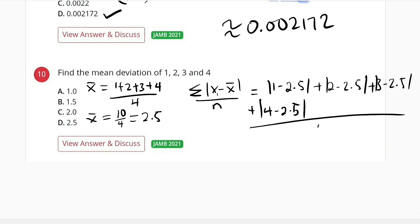1 minus 2.5 will give us negative 1.5, but in an absolute form we have positive value 1.5. Then we add 2 minus 2.5, which will give us 0.5, but in absolute form is 0.5. Then 3 minus 2.5 will give us 0.5 plus 0.5.